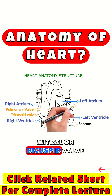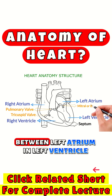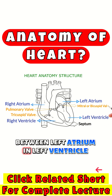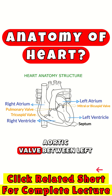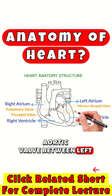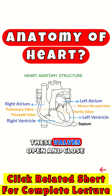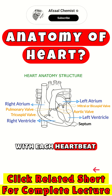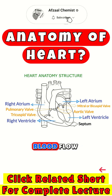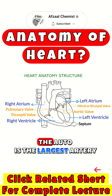The mitral or bicuspid valve is between the left atrium and left ventricle. The aortic valve is between the left ventricle and aorta. These valves open and close with each heartbeat, preventing any backward blood flow.